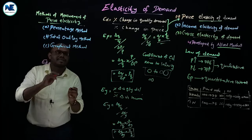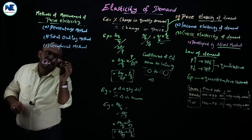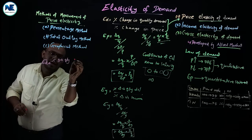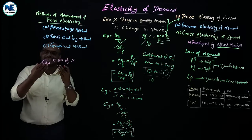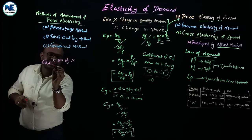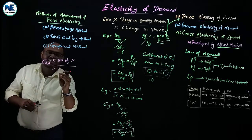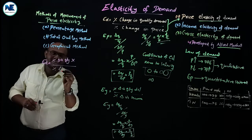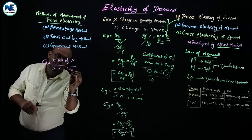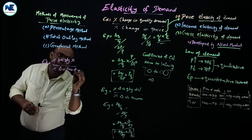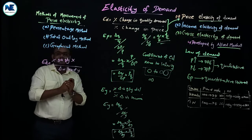Cross elasticity of demand equals the percentage change in quantity demanded of commodity X divided by the percentage change in the price of commodity Y. This is the cross elasticity of demand formula.